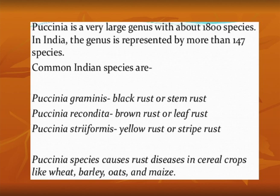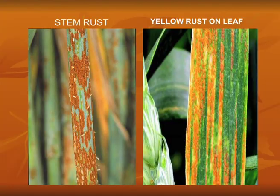Puccinia species cause rust diseases in cereal crops like wheat, oats, and maize. The Puccinia life cycle is completed on two hosts: the first host is wheat (botanical name Triticum aestivum), and the second host is the barberry plant (botanical name Berberis vulgaris).